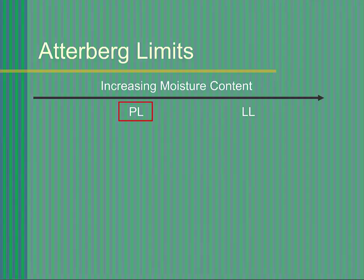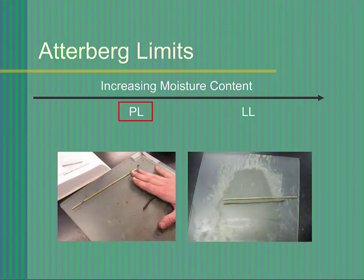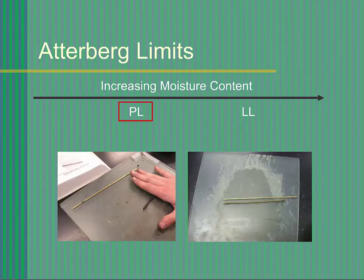The plastic limit test procedure involves taking a sample of soil slightly wetter than the plastic limit and carefully rolling the soil sample into a thread one-eighth of an inch in diameter, as shown. So long as the soil can be rolled into a one-eighth inch diameter rod without falling apart, the soil is wetter than the plastic limit. As the soil is manipulated and rolled out, it gradually loses water. When it reaches the point where it crumbles or breaks apart as it is rolled into a one-eighth inch diameter rod, it is at the plastic limit.